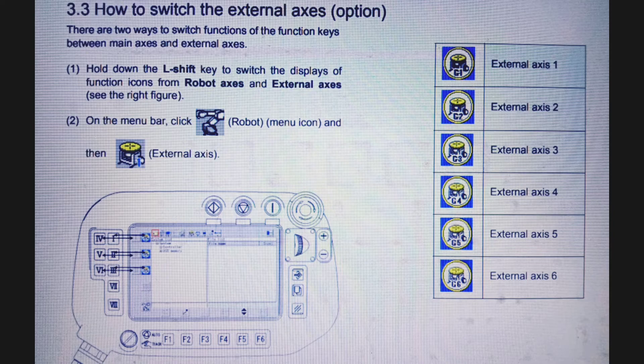Second, on the menu bar, click robot menu icon and then external axis. All these symbols you can see on the screen of the teach pendant. Here G1 you can see in this column.